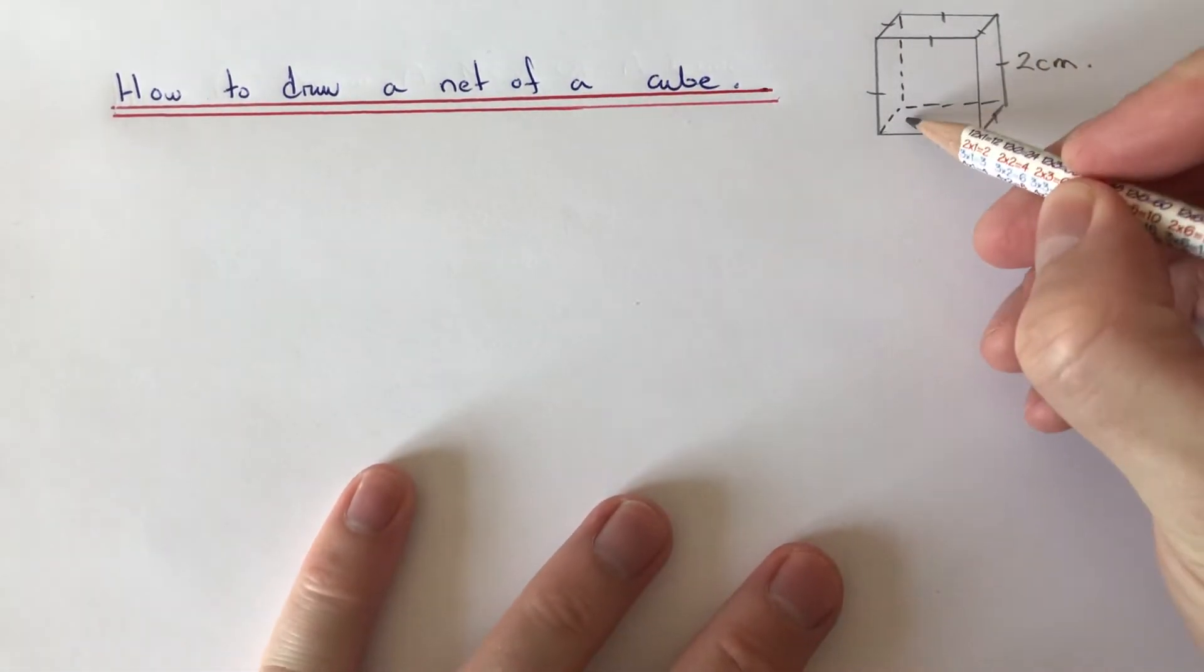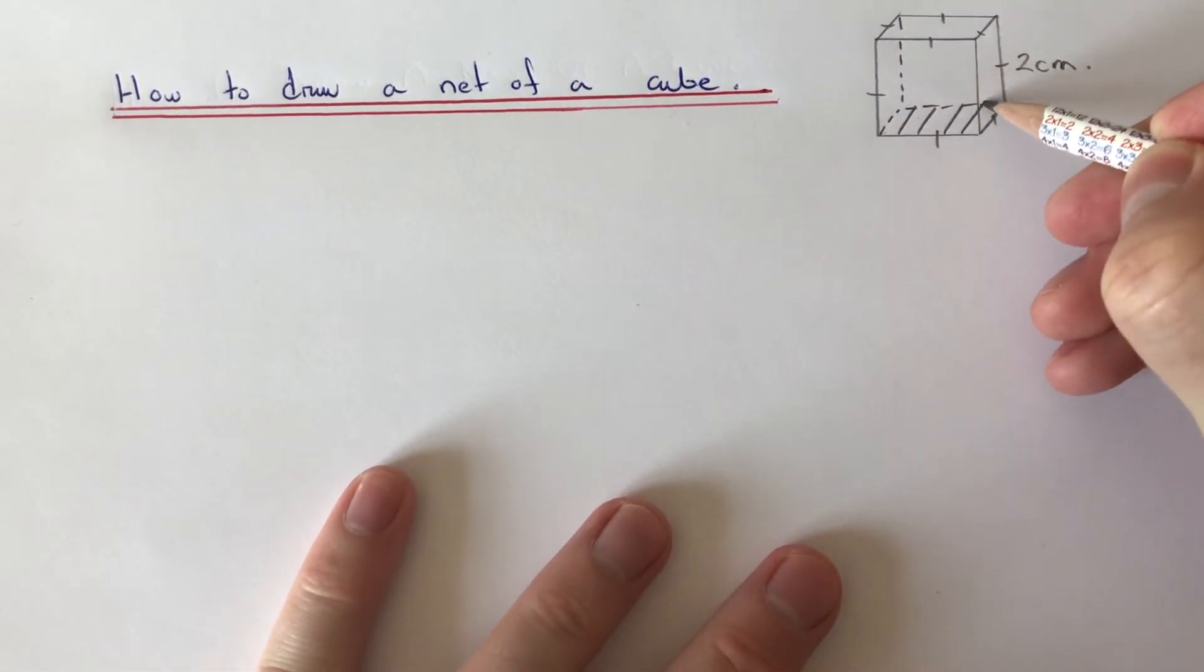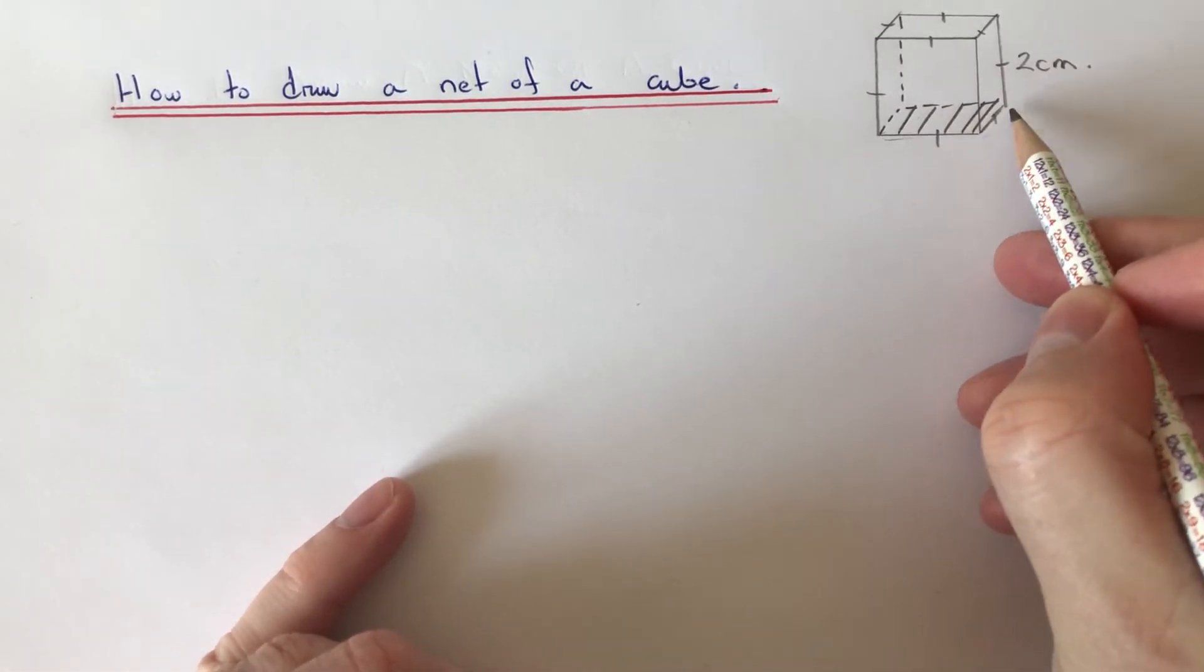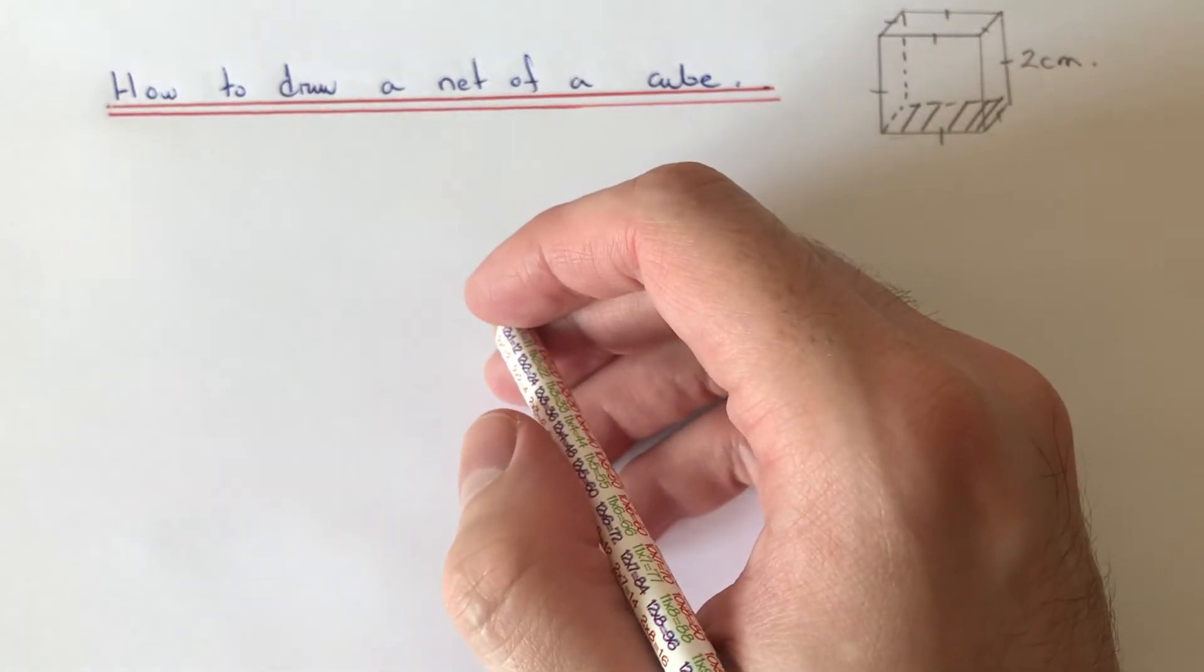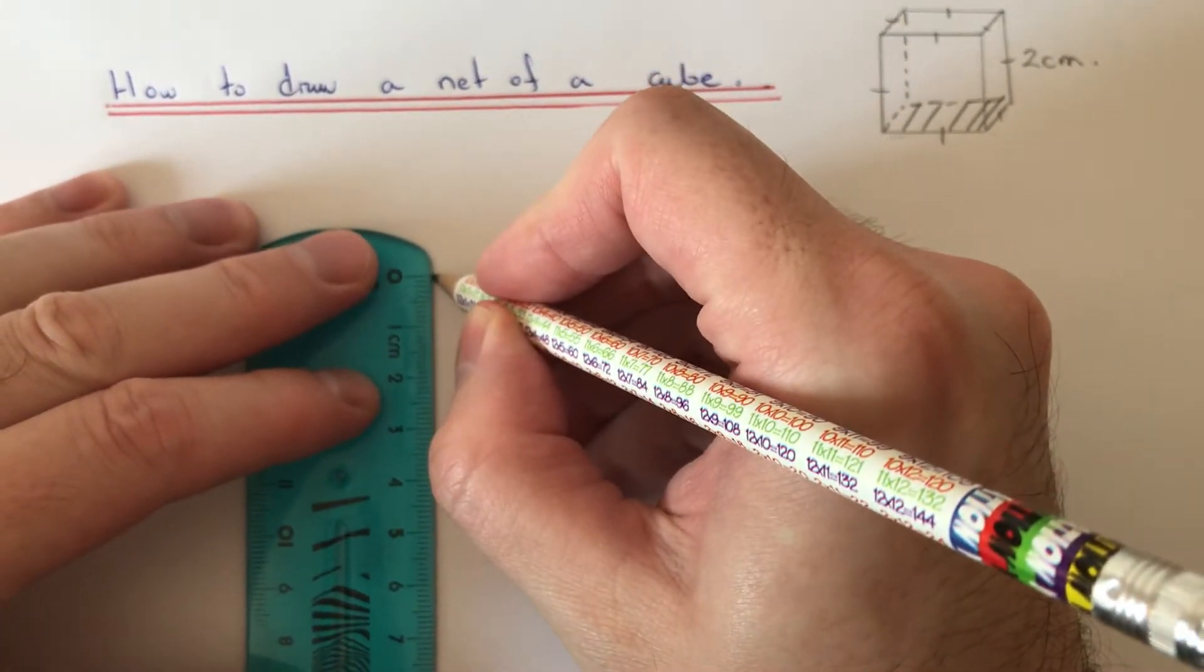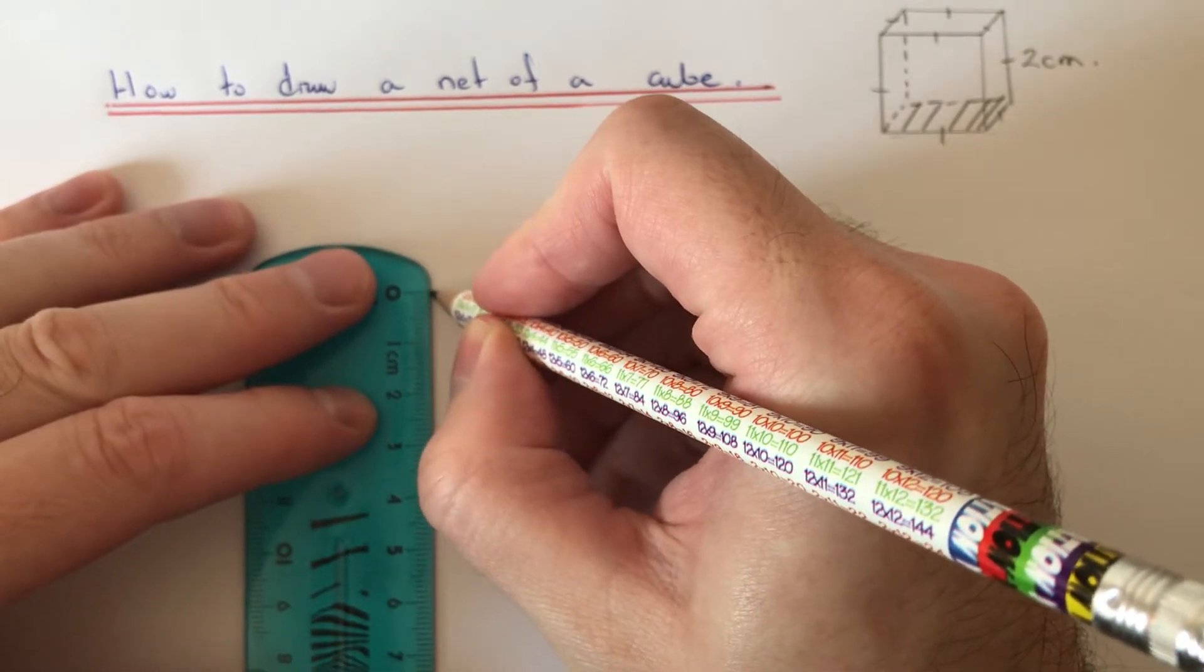First of all, let's start off with the bottom face of the cube. The bottom face is two centimeters by two centimeters and it is a square, so we'll do that face first of all.